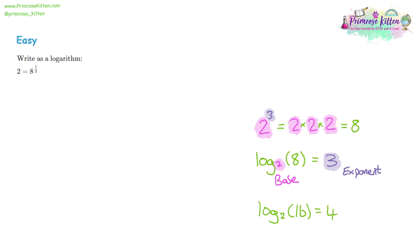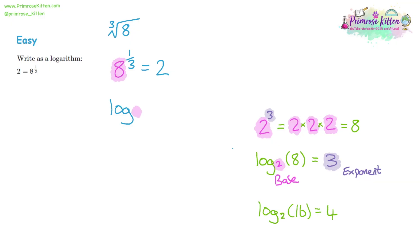Let's look at our first question. We have eight to the power of a third equals two. Eight to the power of a third is another way of saying the cube root of eight — you can write roots as a fraction instead. We want to write this as a log. First, we write log, and we need the base of the log. The base is the number being changed by the exponent, so the eight is the base, and that goes as a subscript underneath log.